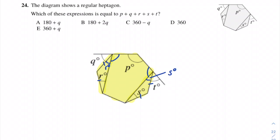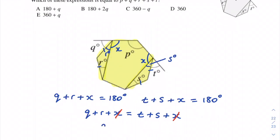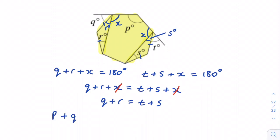Labeling the equal base angles as x, and using the fact that angles on a straight line add up to 180 degrees, we get two equations: q + r + x = 180, and t + s + x = 180. Since both equal 180, we can set them equal and the x's cancel, giving q + r = t + s. This is an important result.